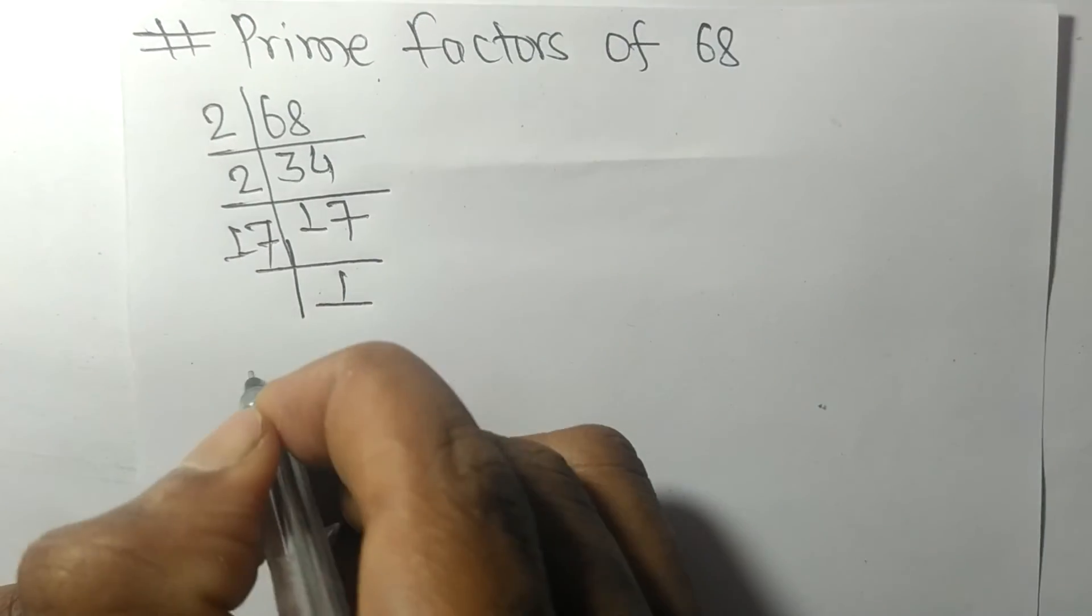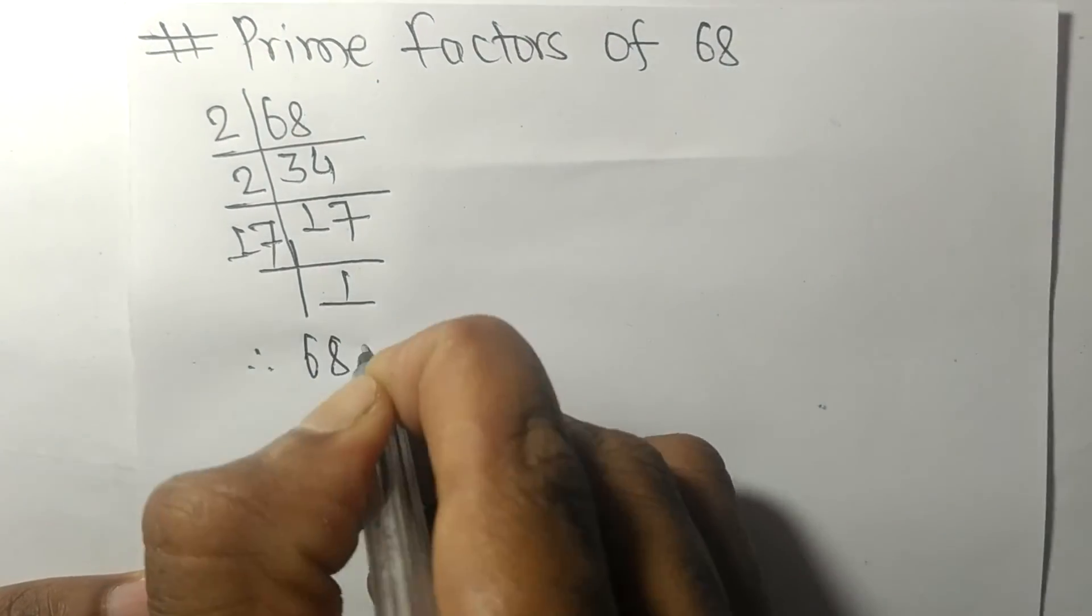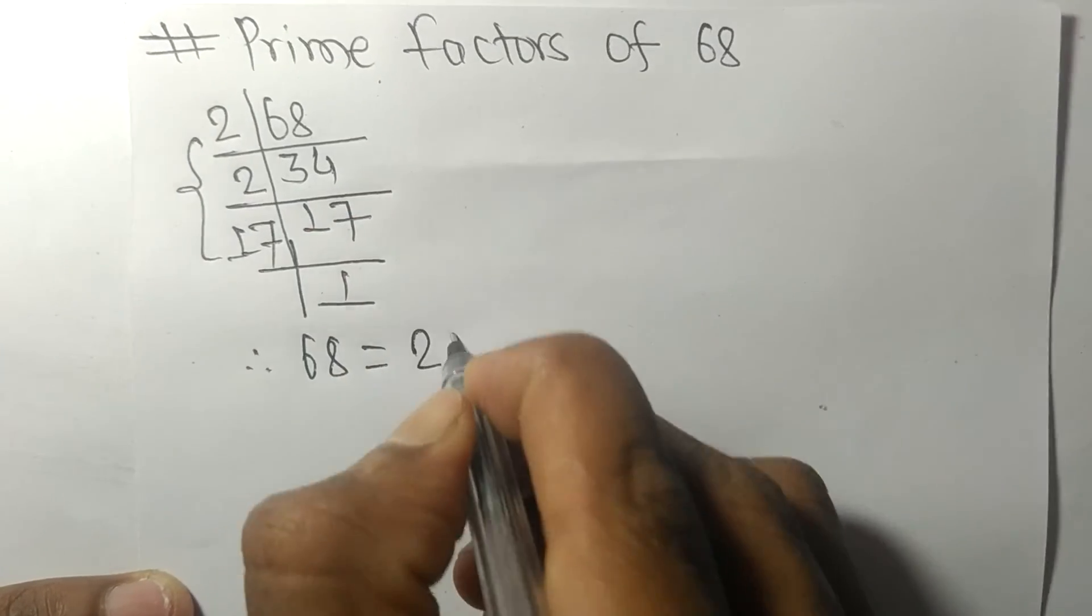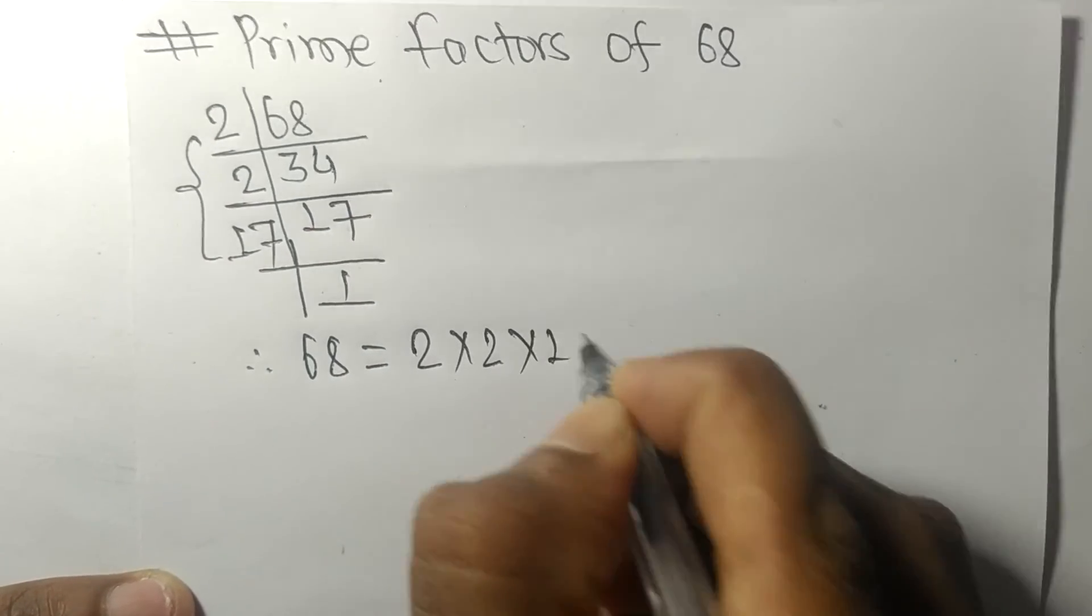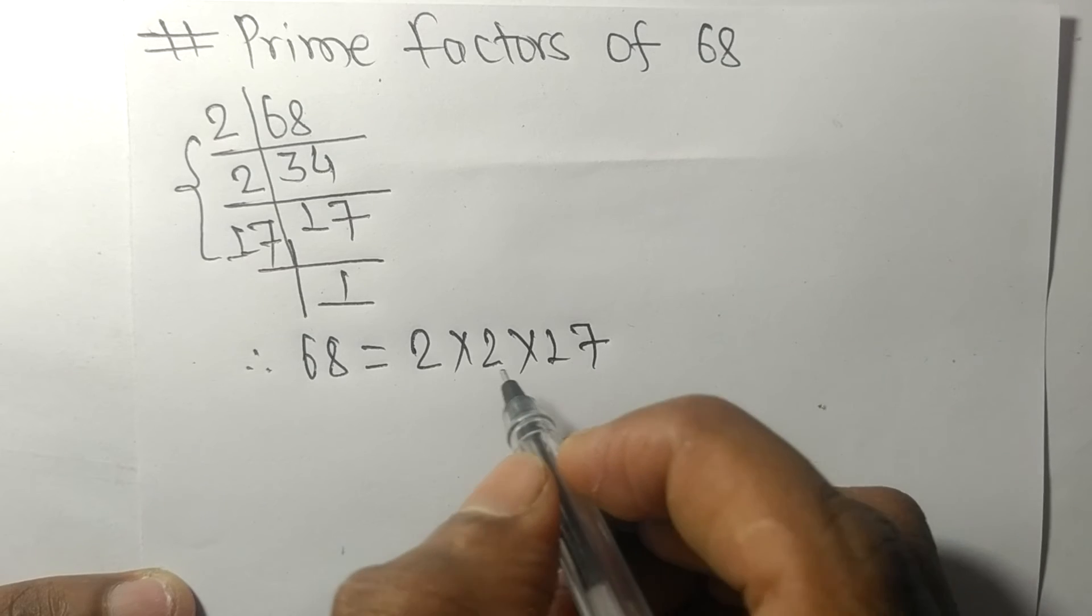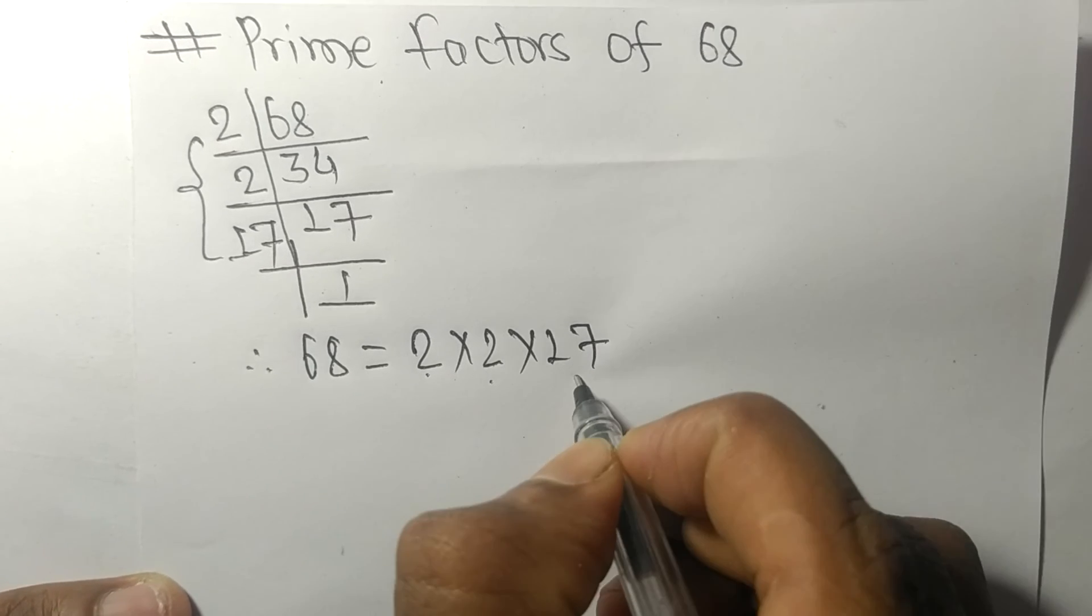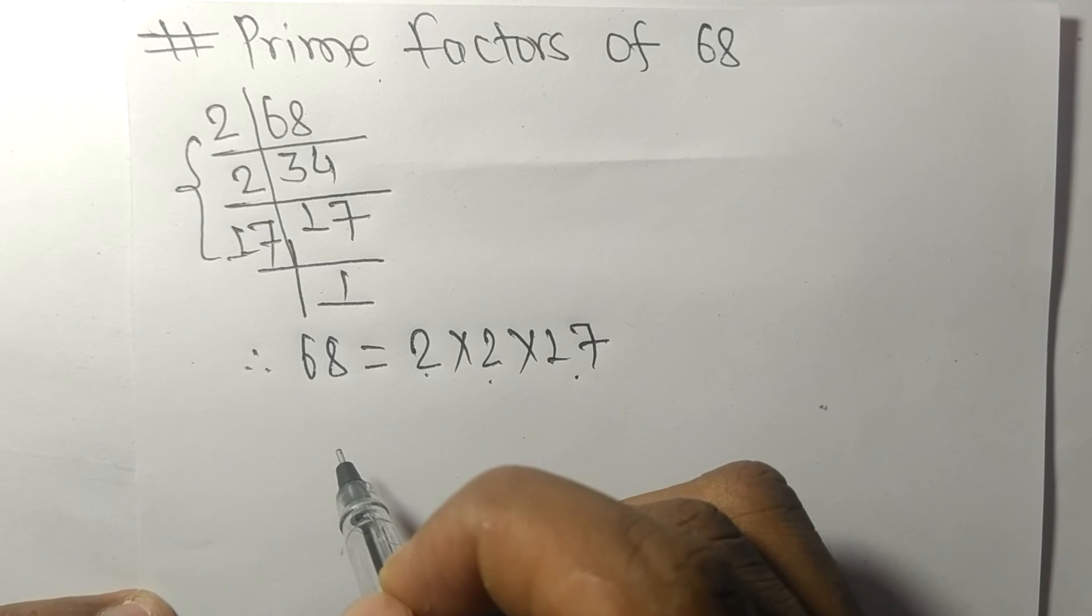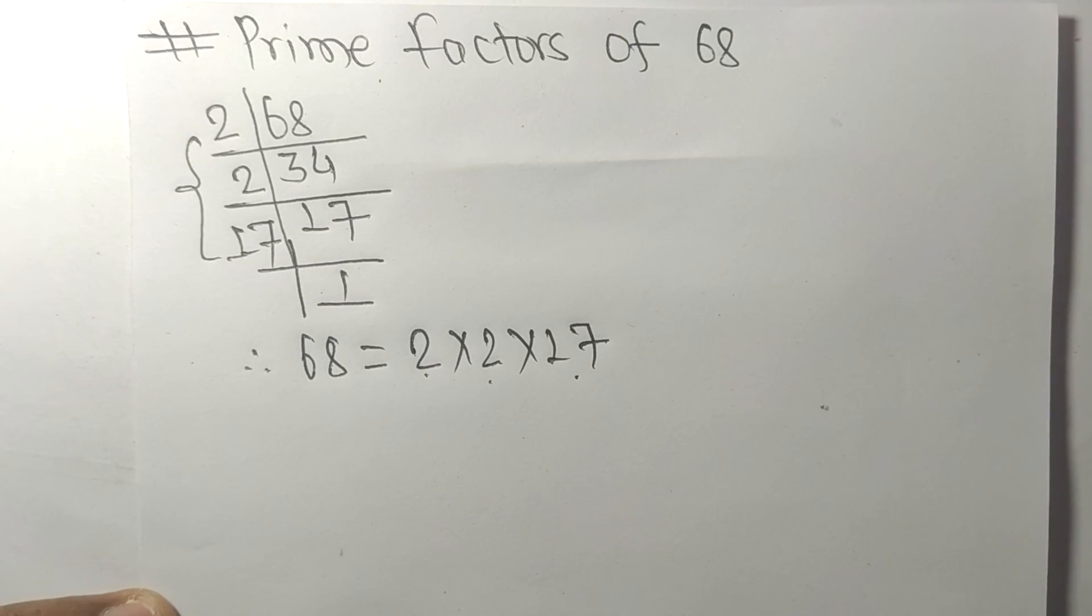So 68 is equal to 2 times 2 times 17. Therefore, 2, 2, and 17 are the prime factors of 68. This much for today, and thanks for watching.